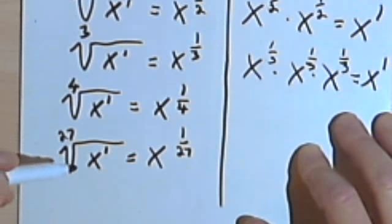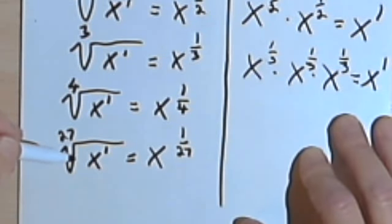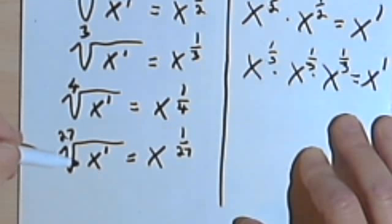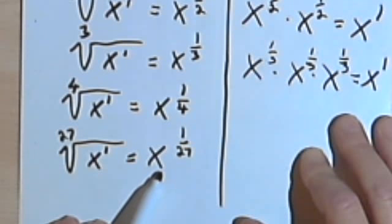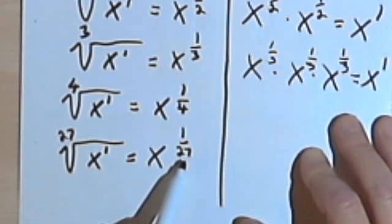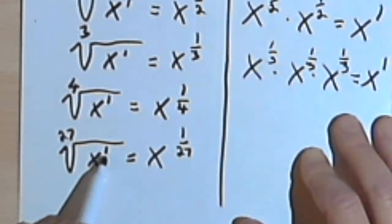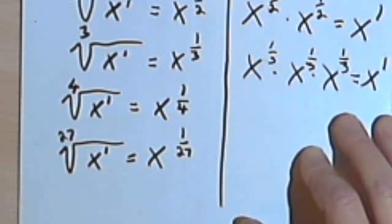So in other words, if you want to convert a radical to a number with a rational exponent, you take the radicand, take it outside of the radical sign, take the index, make that the denominator of your exponent, and take the exponent that the radicand had, that's the 1 here, and make that the numerator.